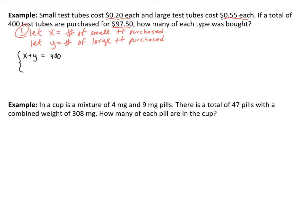So for the cost equation: $0.20 times X, which is 20 cents times the number of small test tubes, plus $0.55 times the number of large test tubes, is going to give me my total. So that's going to be $97.50. I have my system: X plus Y equals 400, and 0.20X plus 0.55Y equals 97.50.